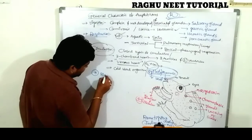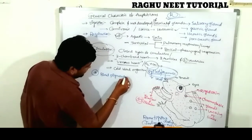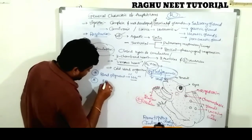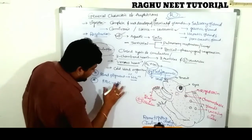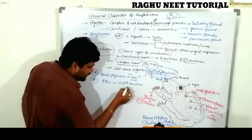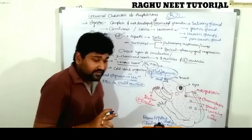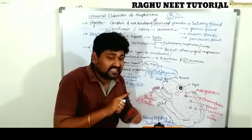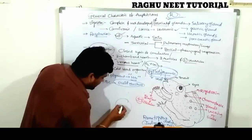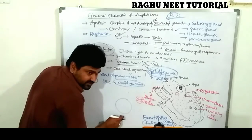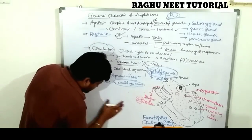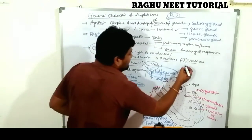The blood pigment of amphibians is hemoglobin. Their RBCs contain an ovoid nucleus. This is different from human beings, where RBCs have no nucleus. In amphibians, one large ovoid nucleus is present in the RBC.